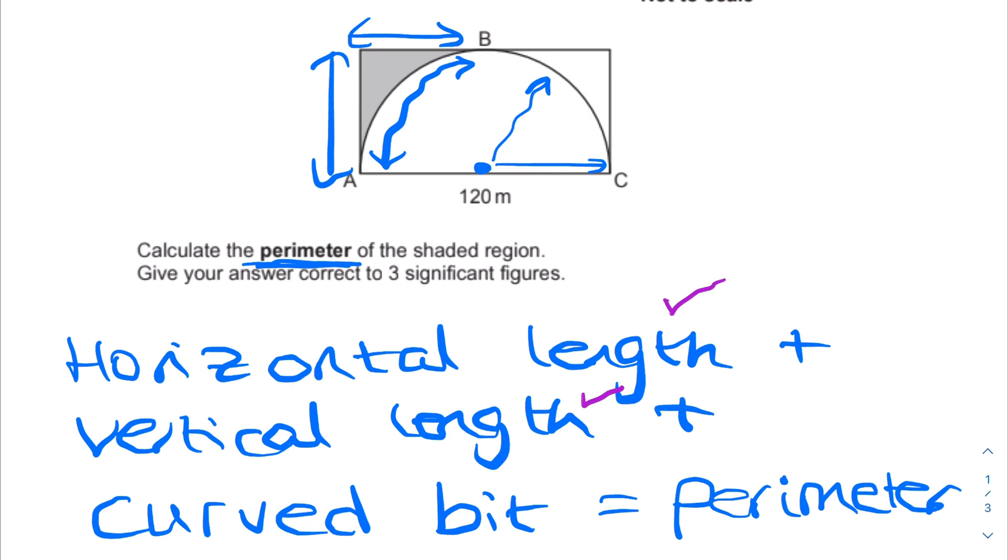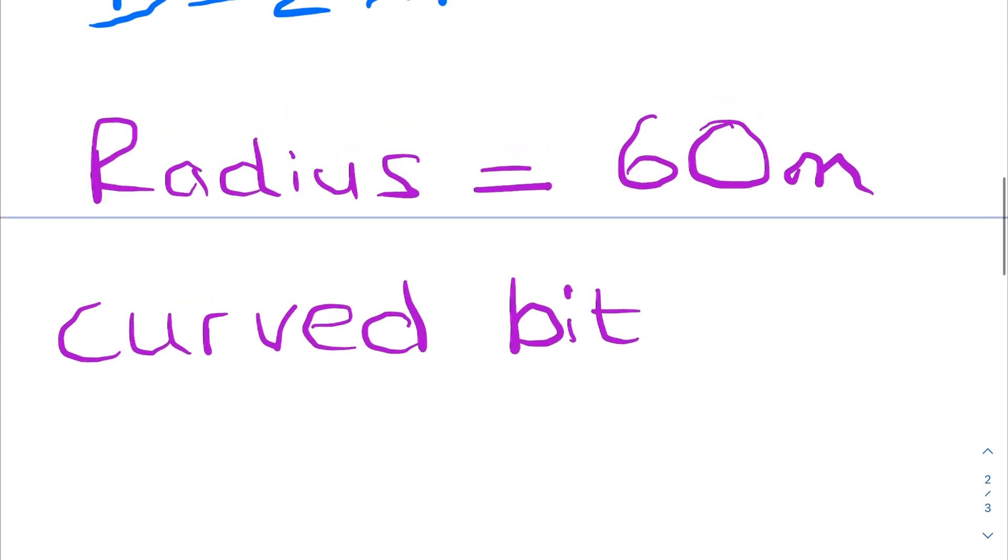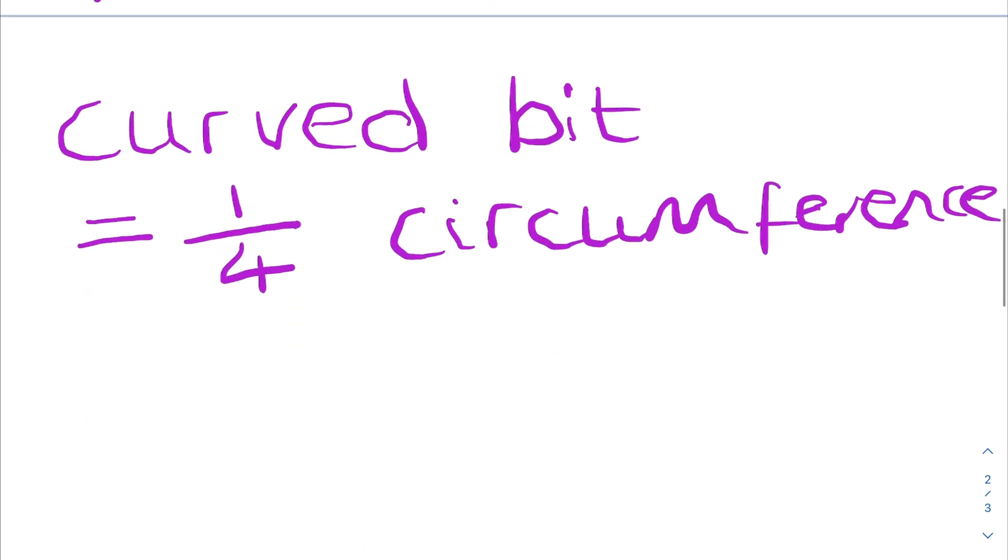The curved bit is simply a quarter of the total length of a full circle. So a full circle's length all the way around is called a circumference, so a quarter of the circumference is the value of the curved bit.